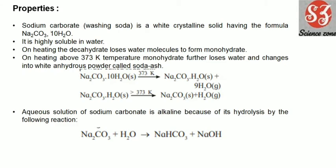Now, the properties of sodium carbonate: sodium carbonate is called washing soda because it is used for washing. It is a white crystalline solid with the formula Na₂CO₃·10H₂O and is highly soluble in water. This is the decahydrate form, meaning it has 10 water molecules. If you heat this decahydrate, it will lose 9 water molecules and become monohydrate.